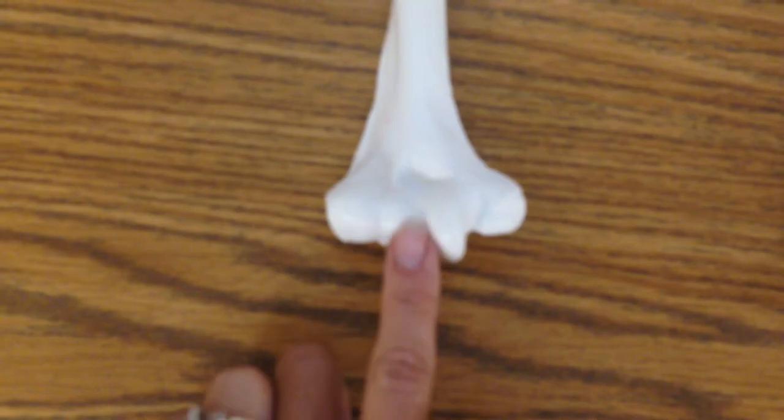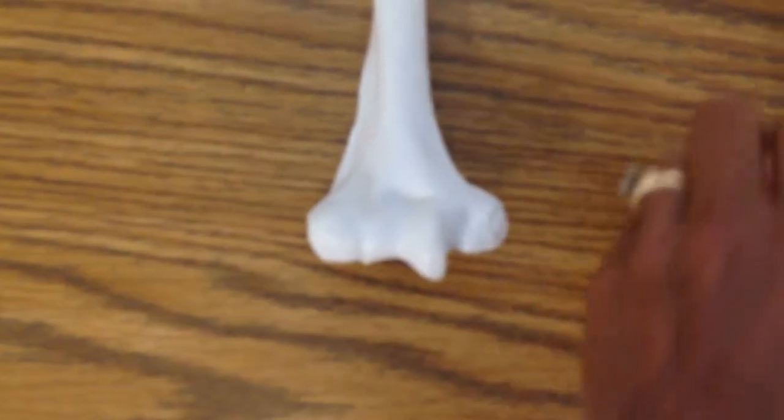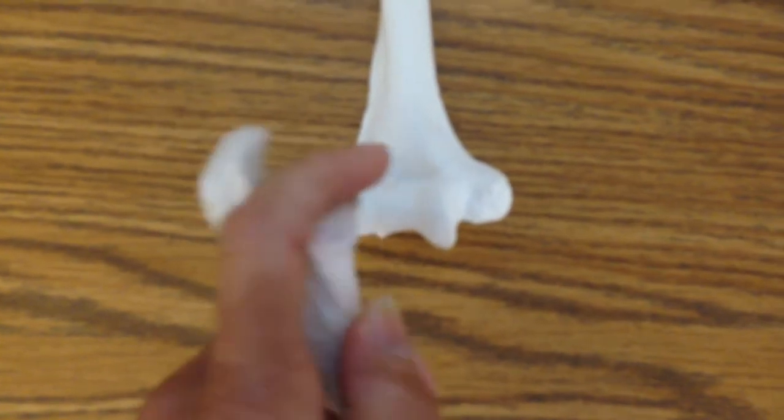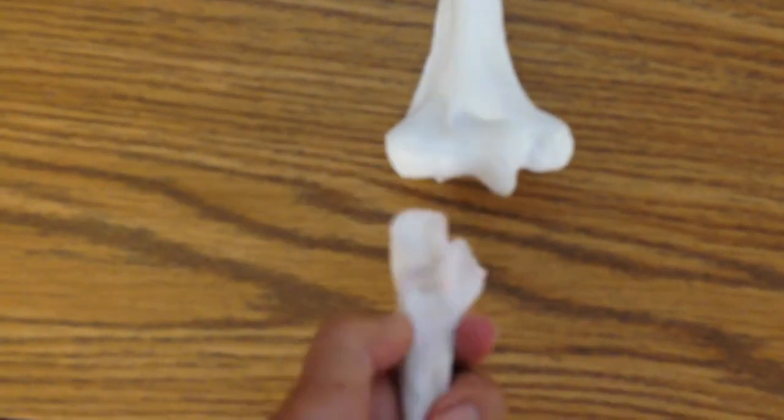The trochlea fits with the ulna's trochlear notch. It comes right in to here.